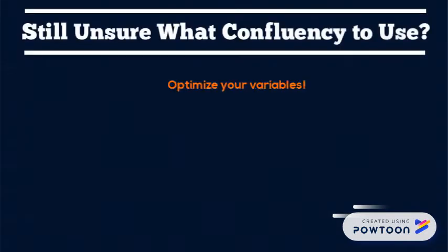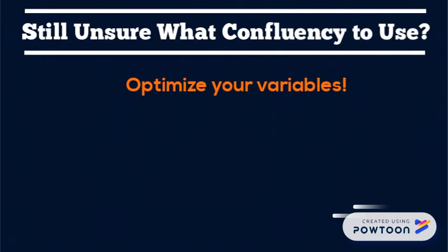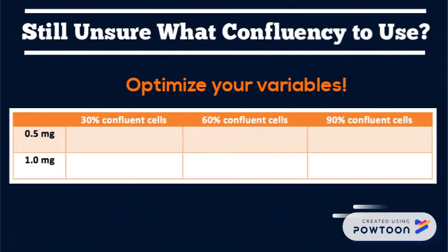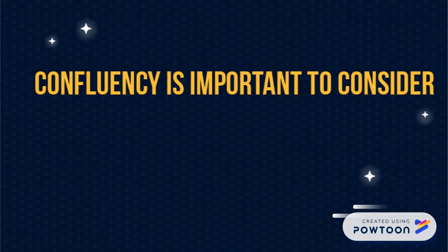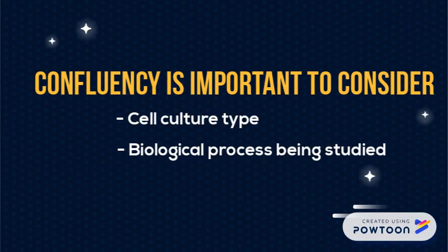If you are still unsure of what confluency your cells should be for your experiment, consider performing the assay with cell cultures of increasing confluency to see which produces the optimal result. Confluency of your cell culture is important to consider when designing your experiment. When determining what confluency is appropriate, you should think about your cell culture type and the biological process you are studying.